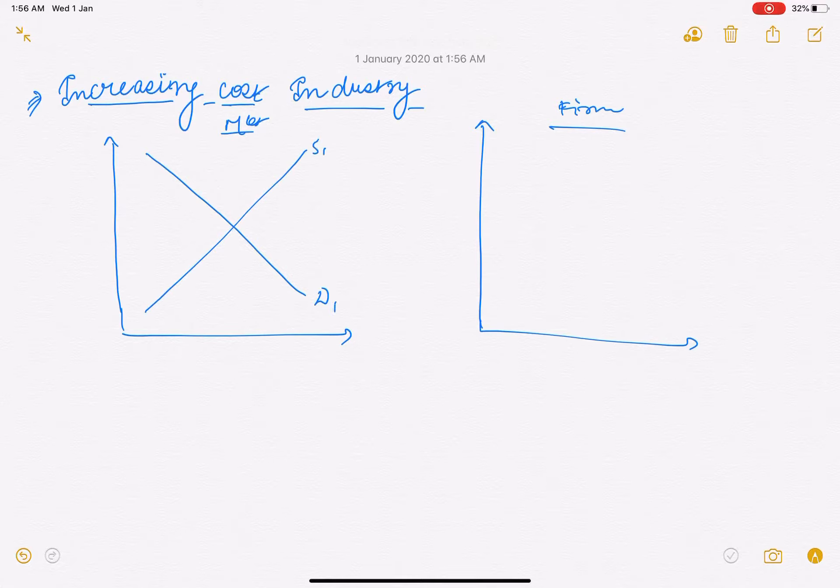This demand increases - kisi bhi reason se increase ho sakti hai. Agar hamari demand increase ho rahi hai, meaning income badh gayi hai, price of the related good badh gaya hai, toh hum is good ki zyada consumption kar rahe hain. Jab demand increase hota hai toh price bhi increase ho rahi aur hamari quantity bhi increase ho rahi hai. Price bhi increase hoga, quantity bhi increase ho rahi.